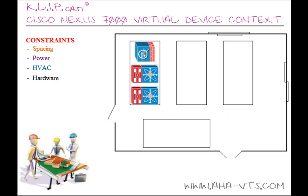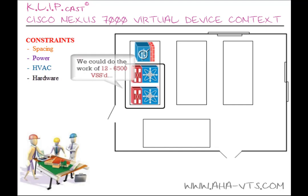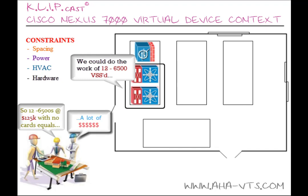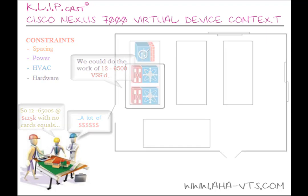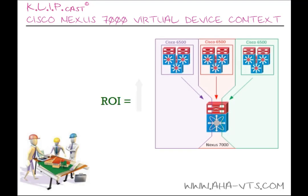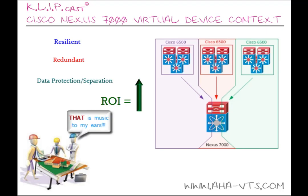Hardware costs are also reduced since, again, we have fewer chassis, which reduces the overall number of line cards needed, GBICs, and anything of the like. Your return on investment has increased, all the while still maintaining resiliency, redundancy, and data protection and separation in your data center environment.